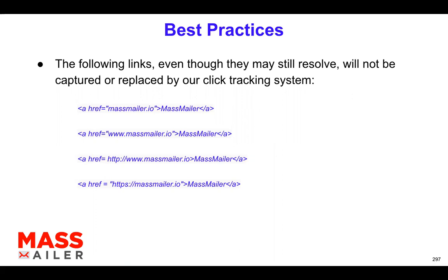If you have something like what is mentioned here, the link will appear and somebody will be able to click on it, but you won't be able to track it. You can immediately see that the first example is missing http or https. The second one is also missing http or https. The third one doesn't have quotes, and also there's a space right after the equals-to symbol. The fourth one has http and it's within quotes, but there is a space around the equals-to symbol. So these will all basically not work — meaning you won't be able to track the click events. These are all a big no-no; you're not supposed to use this formatting.